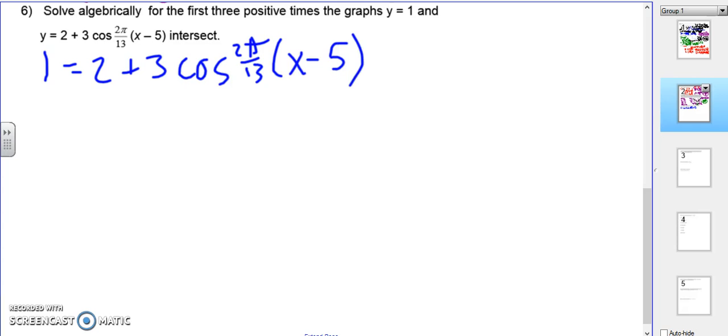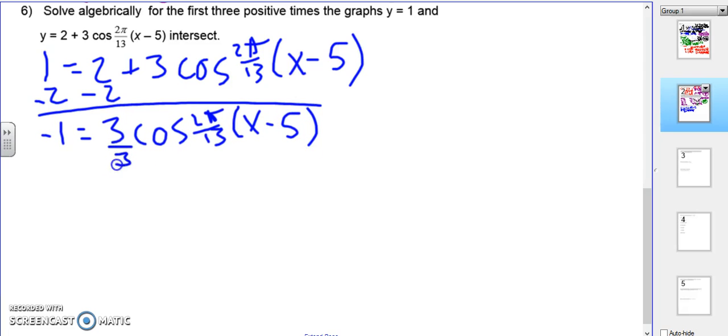So we're going to set them equal to each other. 1 equals 2 plus 3 cosine 2 pi over 13 x minus 5. We want to get x alone. So first thing we're going to do is subtract 2.